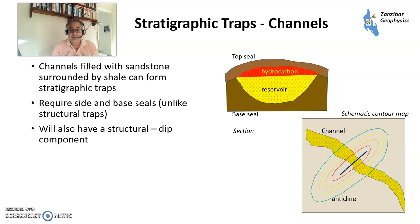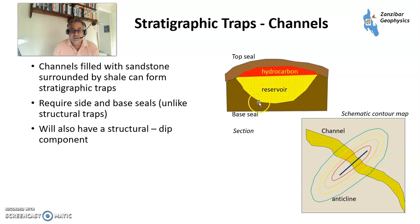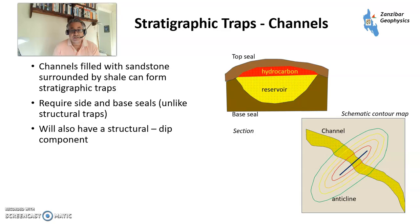Moving on to stratigraphic traps, which are formed by changes in layering. One example is a channel — carved and filled with sand — draped over the top of an anticline, giving dip on both sides and side seals. The key thing with stratigraphic traps is you have more than one seal: unlike structural traps where you mainly worry about the top seal, here you also have to worry about base seals and side seals. Seismic can really help if you've got a seismic anomaly.